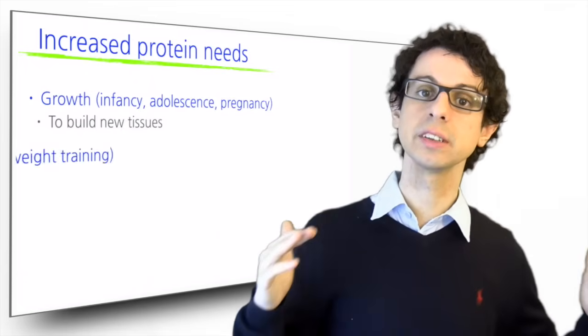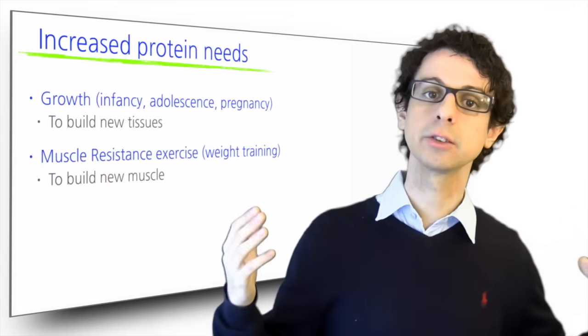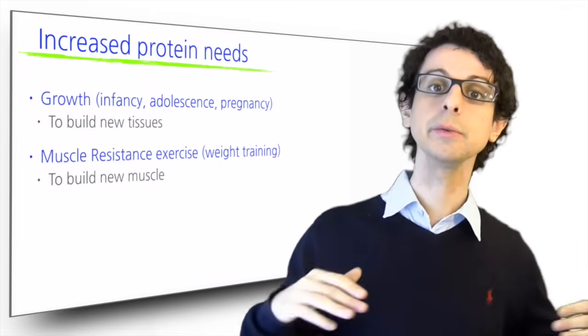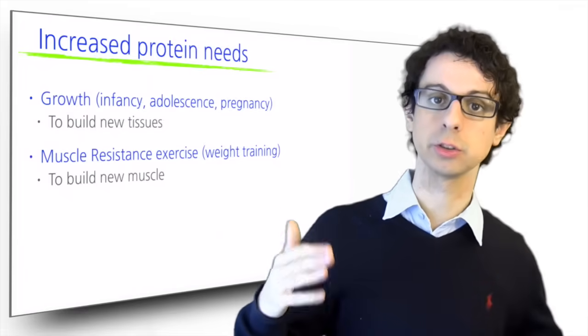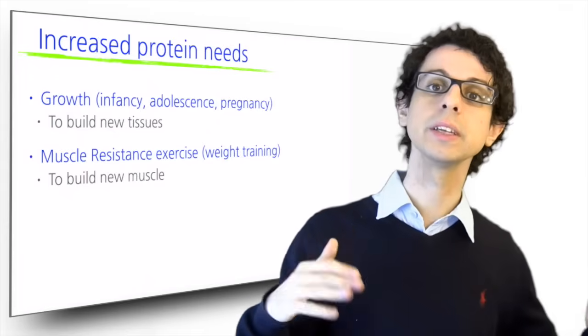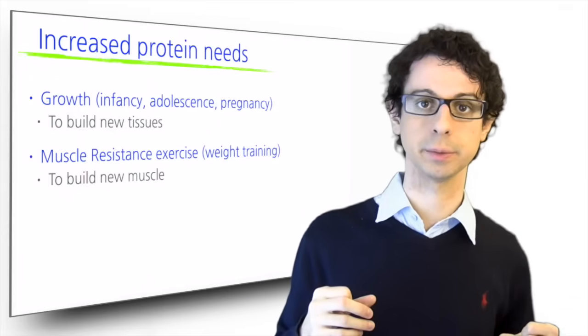Another situation is resistance training, such as weight training or bodybuilding. Here you want to build some new muscle, so again you're building new tissue, not just maintaining it, and you will need about 10 to 20 grams of extra proteins for it.